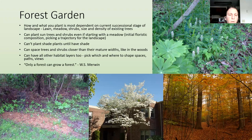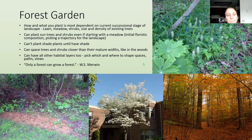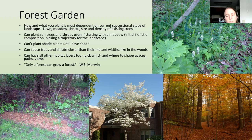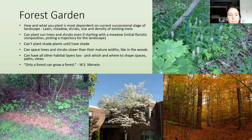For the forest garden, how and what you plant is most dependent on your current successional stage of the landscape — if you have a meadow versus existing large trees, you'll plant it really differently. You can plant trees and shrubs that'll eventually grow in a forest, but if starting a forest garden, plant the trees and shrubs you'll want there eventually as long as they're sun tolerant, even if you're starting with a meadow. This is called initial floristic composition — you're picking a trajectory for the landscape.